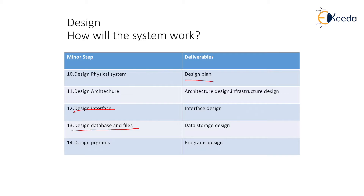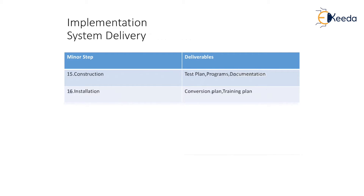Next is design the database and files, which are actually going to be required at the time of data implementation. And the fourth step in design is design the program — so the program should flow. It is not the actual program; we are actually designing the flow of your programs. In the next step we actually implement our core — like system delivery. In the implementation we actually construct the core with the help of test plan, programs, and documentation. After formation of the core, the final step we follow is installation — in that we actually follow the conversion plan and the training plan.